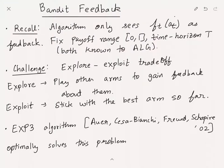In this lecture we'll look at the bandit feedback version of the problem. This is supported in part by NSF award CCF 1749864. Recall the setting: in this setting the algorithm only gets to see the feedback corresponding to the arm it chose. In particular, at time step t, if the algorithm chose arm a_t, then the feedback it sees is f_t of a_t — it doesn't get to see f_t of other arms it didn't choose.